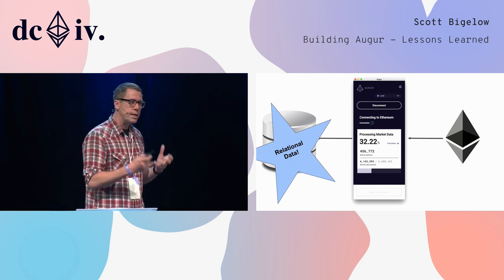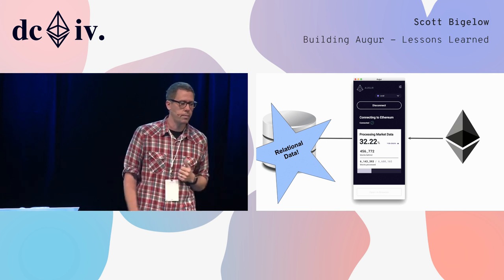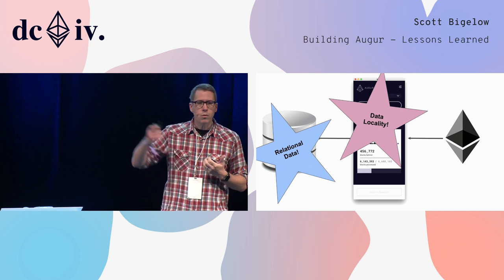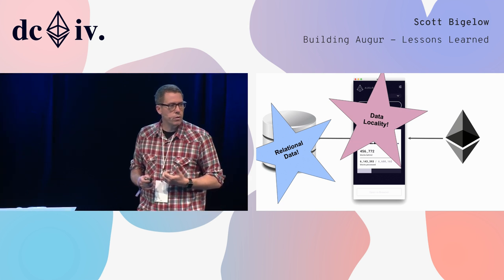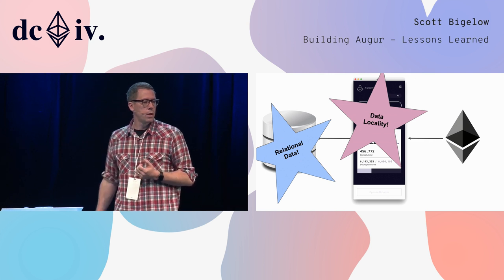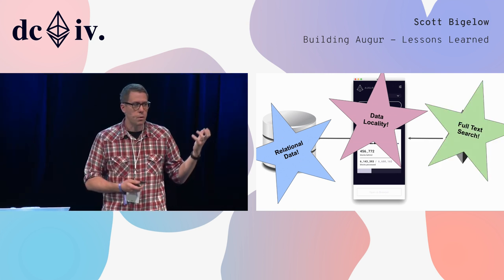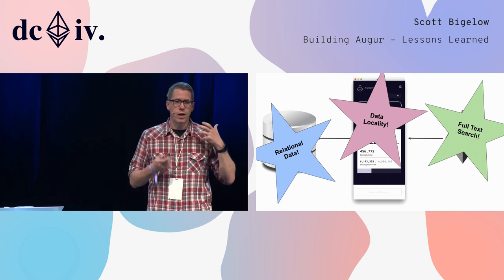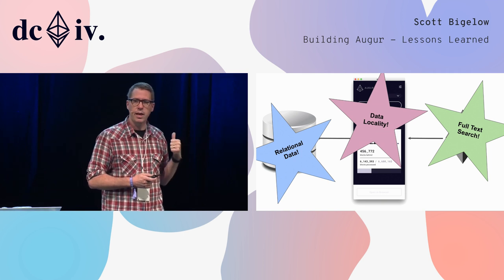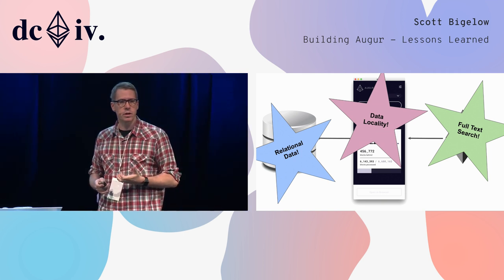By putting this into an indexed relational database, we can serve that with a simple single joined query. We also get data locality — no matter what your latency is to that Ethereum node, you are serving this data locally. Users are the ones contributing titles for these markets and outcomes, and whenever users are entering text, you need a good way to find that text, so we have string matching and search patterns that help with discovery.